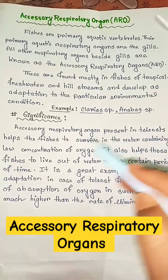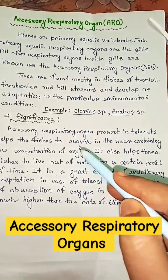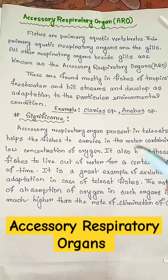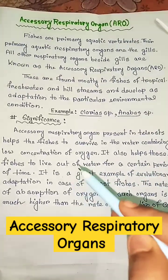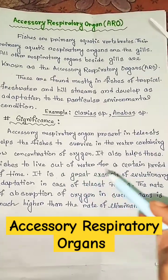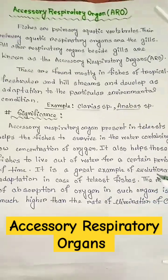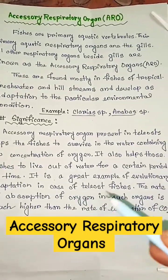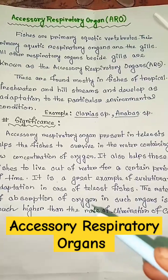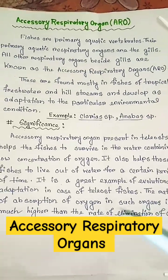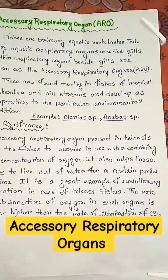The significance of accessory respiratory organs present in teleosts is that they help fishes survive in water containing low concentrations of oxygen. They also help those fishes to live out of water for a certain period of time. This is a great example of evolutionary adaptation. In teleost fishes, the rate of absorption of oxygen in such organs is much higher than the rate of elimination of carbon dioxide.